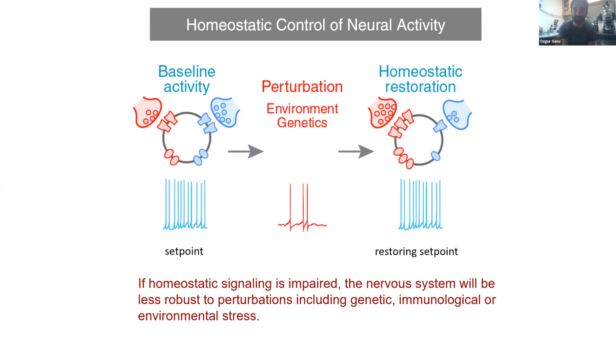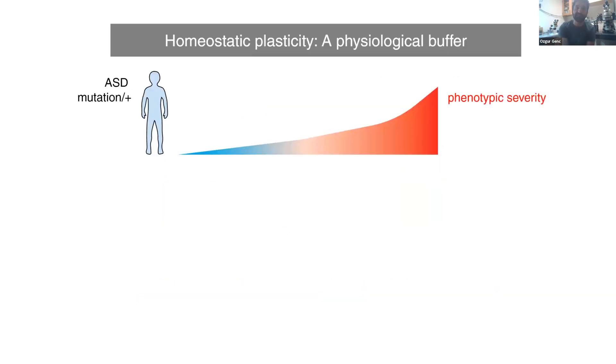This is also highly relevant for neurological disorders. If this signal is impaired, then the nervous system can be less robust to perturbations that can include genetic, immunological, or other environmental stressors. I would like to emphasize this phenomenon in autism spectrum disorders. Autism spectrum disorders are caused by idiopathic causes, or there are mutations recently identified in the last decade that put individuals into this phenotypic spectrum. An individual carrying a de novo mutation can be totally fine in terms of phenotypic severity, but in certain cases this spectrum can be vastly different and quite severe.